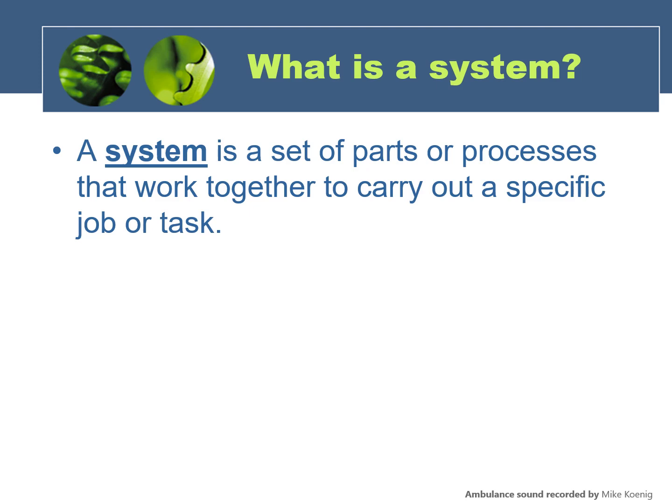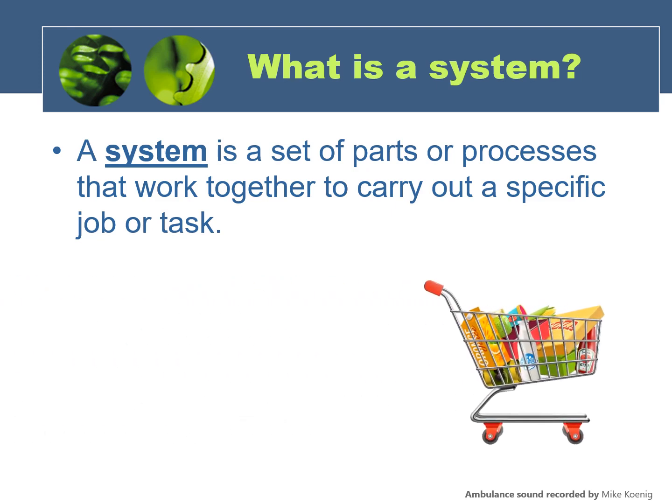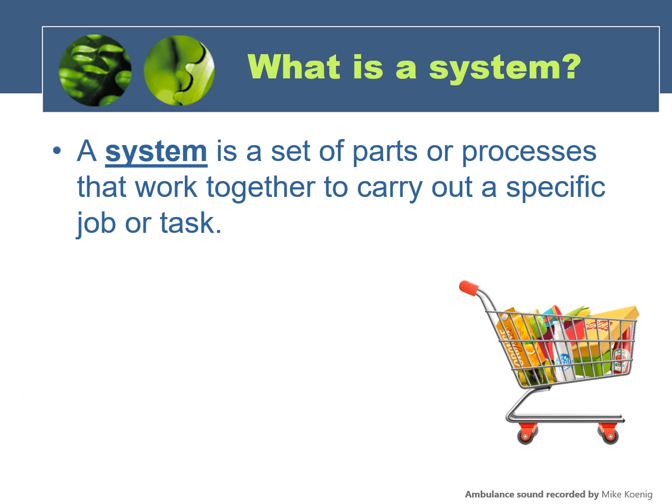What makes it complicated is that many different kinds of things can be considered systems. For example, take a shopping cart — it can be thought of as a system that holds and transports groceries as you move about the store, or helps you carry groceries out to your car. What about a cell phone? It can be thought of as a system that lets you make and receive phone calls and texts, play games, and listen to music, among other things.